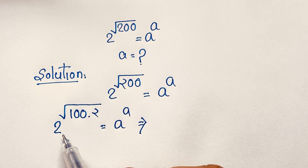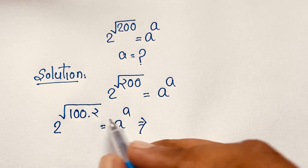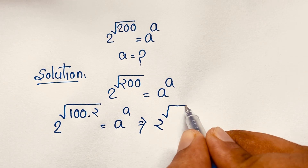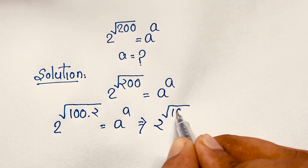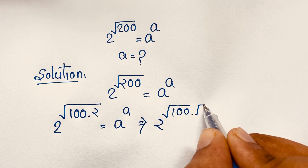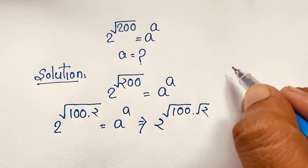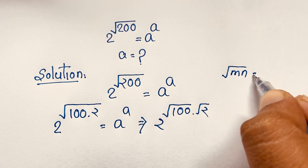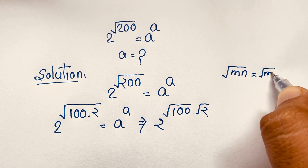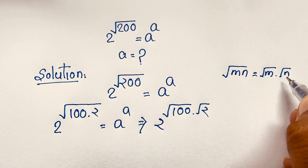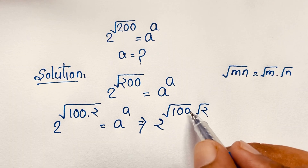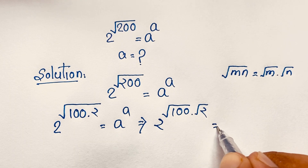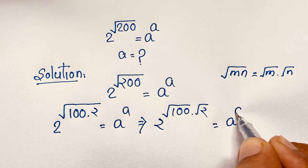Now this becomes 2 to the power √100 times √2. Because we know that √(mn) = √m times √n. Applying this rule here, it will be 2 to the power √100 times √2 is equal to a to the power a.